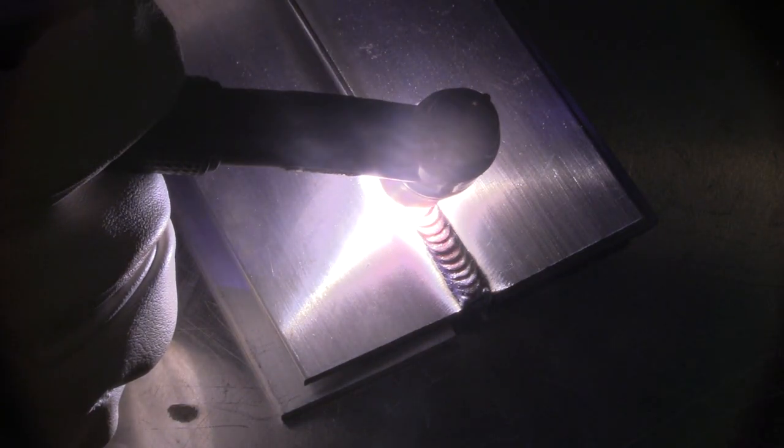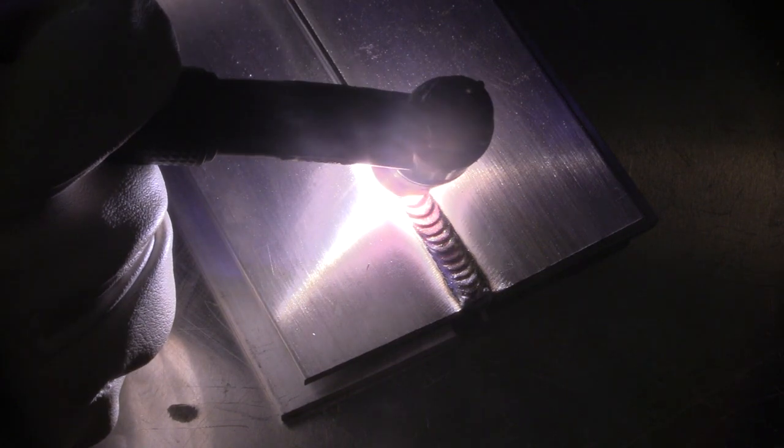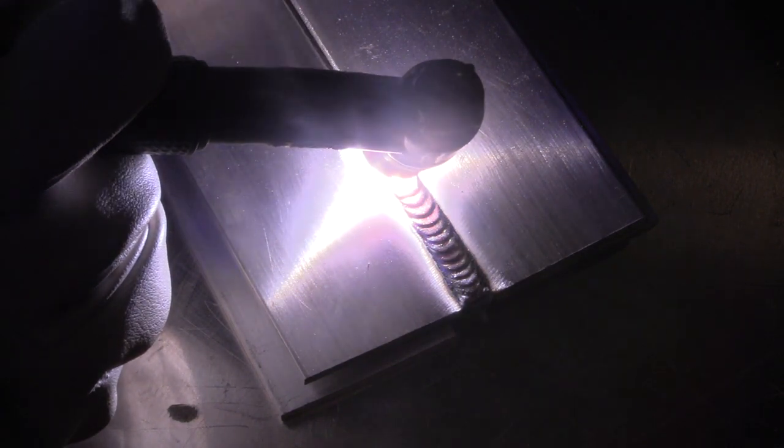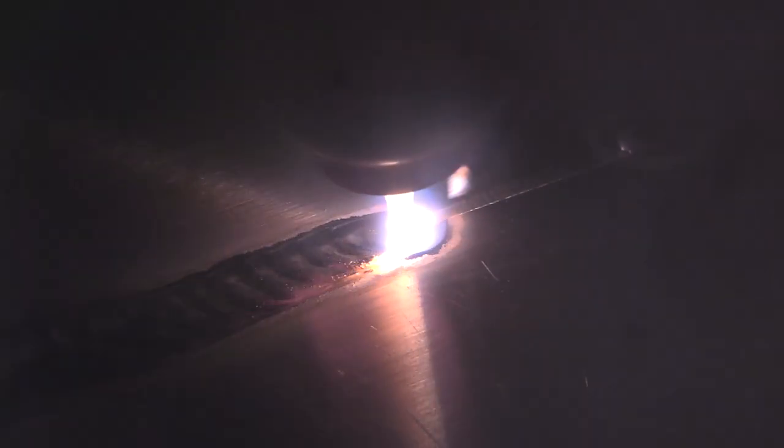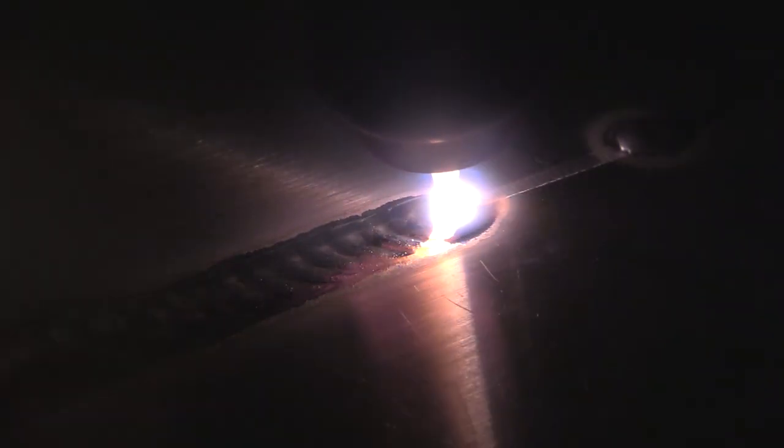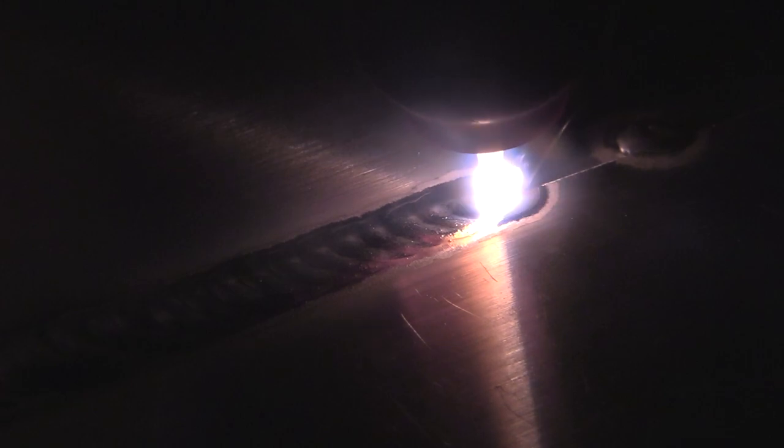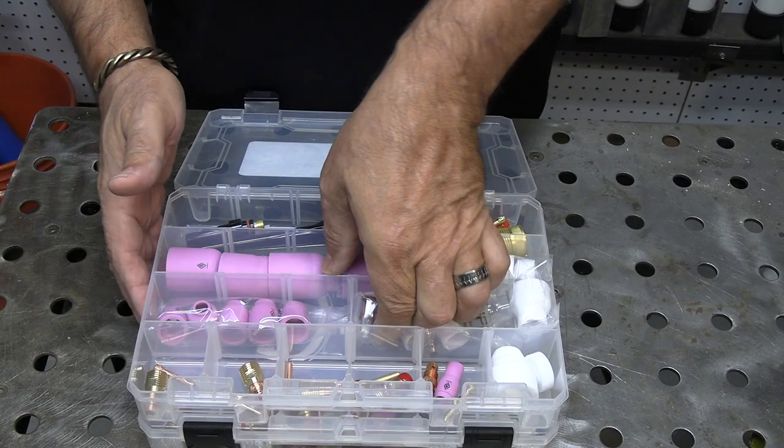I really like using the number six stubby gas lens for general aluminum welding. It lets me use a long stick out when I need to, but also doesn't give me too much gas coverage. Kind of limits that etching zone around the weld, because where you don't have gas, you won't get that etching zone.